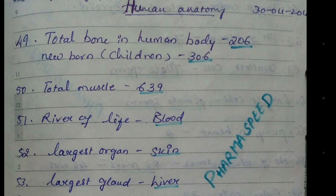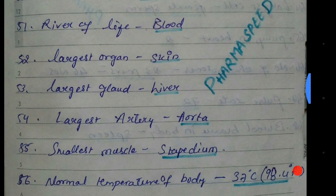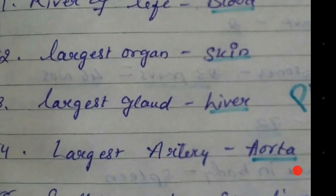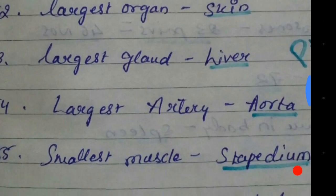Coming to the next: the largest organ. What is the largest organ? Skin. Because it covers the whole body, that is the largest organ. Largest gland in our body is the liver.